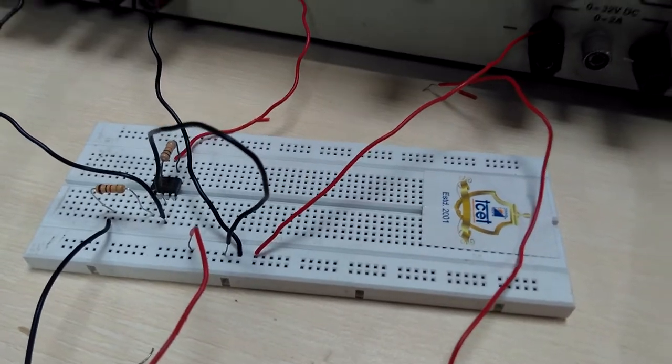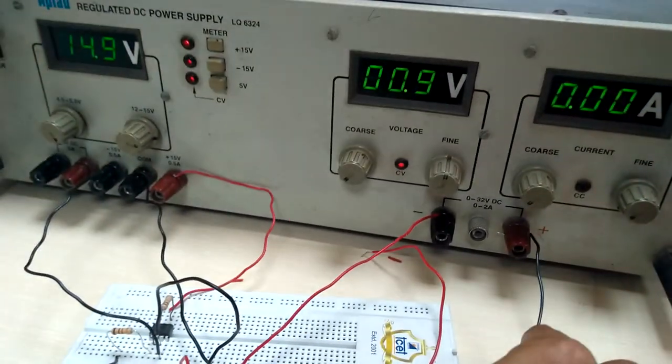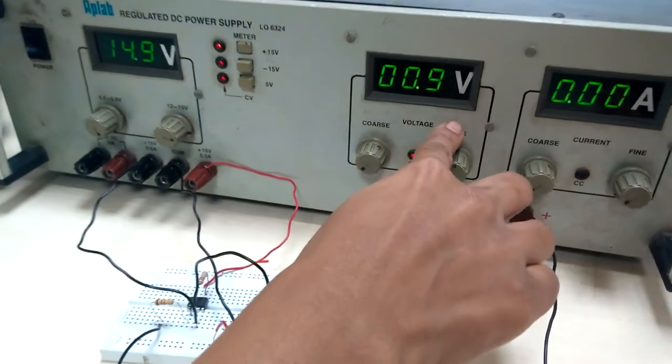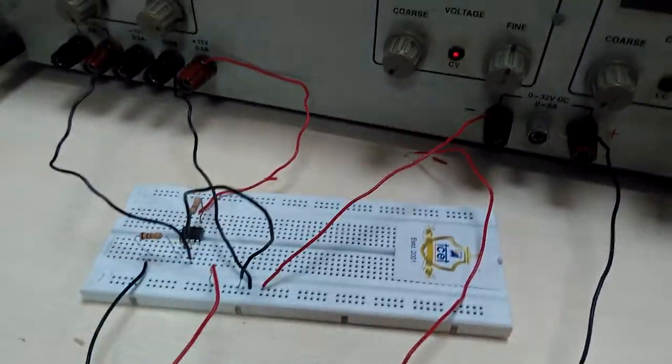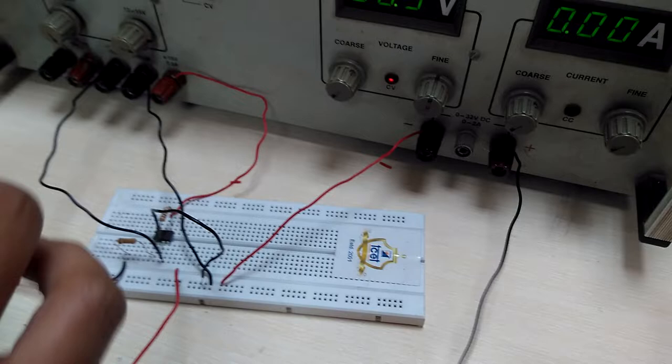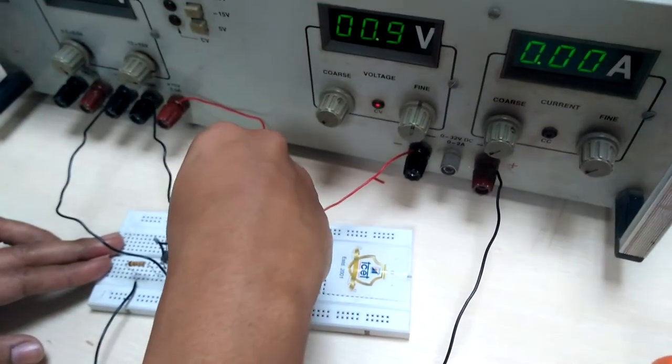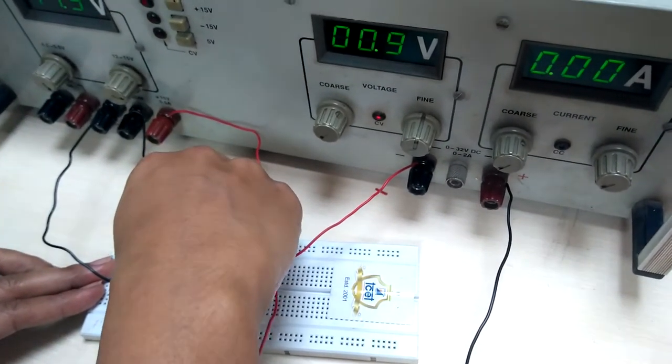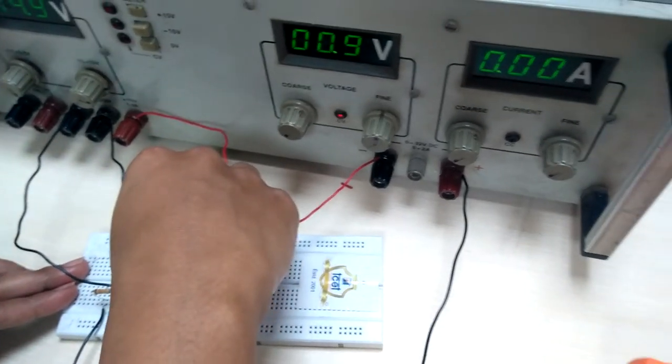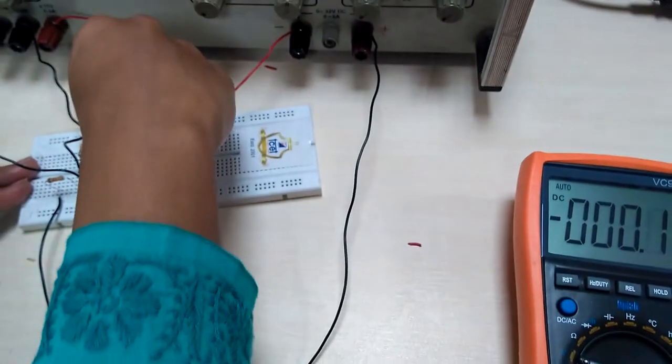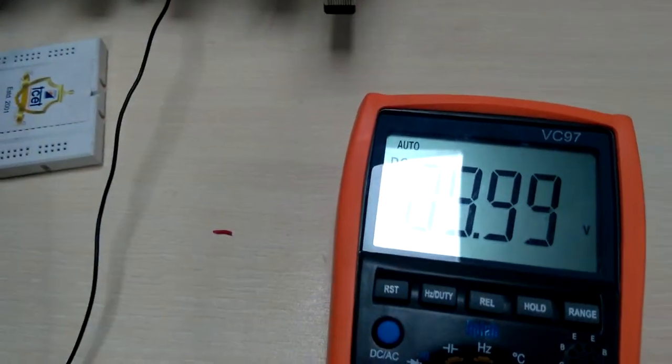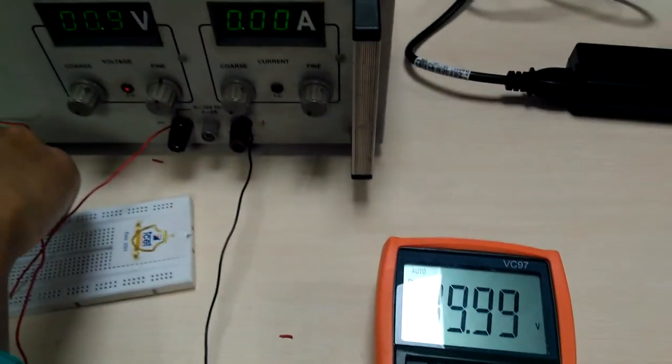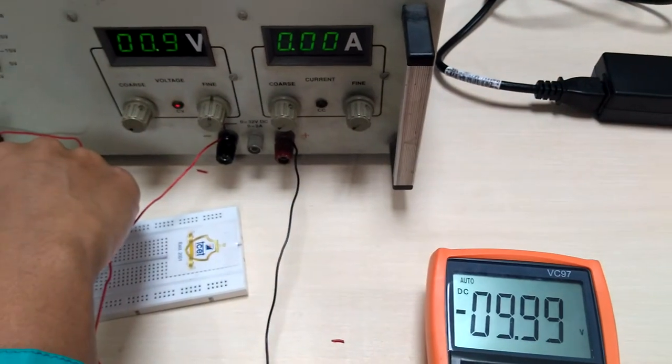Now we change the input to DC supply. Apply 1 volt of DC voltage at pin number 2. Now we will check output on multimeter. So connect multimeter at pin number 6. So this is the output. If you check this sign, it is showing negative because we are doing inverting amplifier.